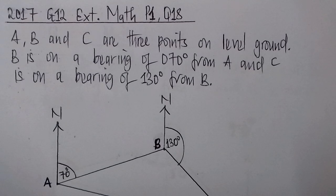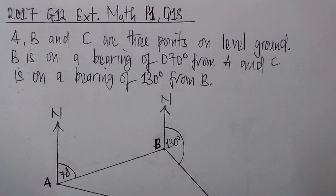Hello viewers. In this video I want us to look at a question on bearings. This question is coming from a 2017 Grade 12 external math paper 1 and it came as question 18. The question reads: A, B and C are three points on level ground. B is on a bearing of 070 degrees from A and C is on a bearing of 130 degrees from B.